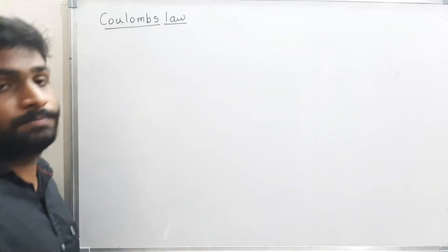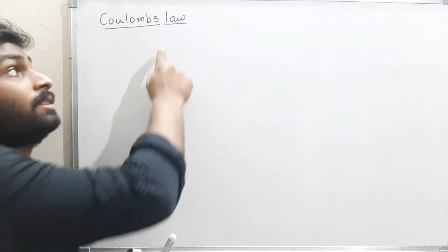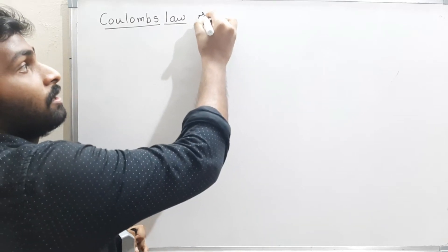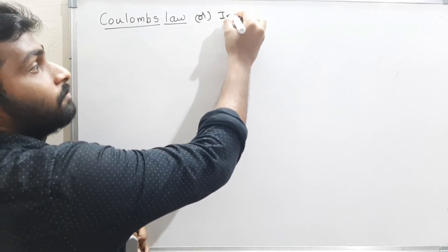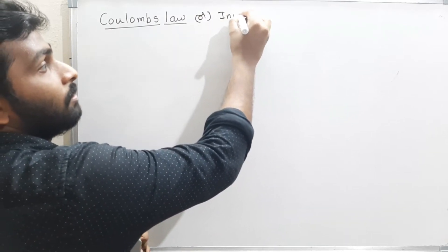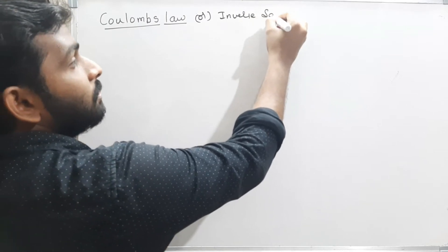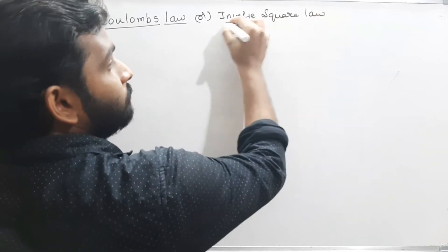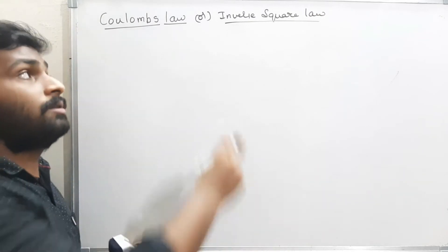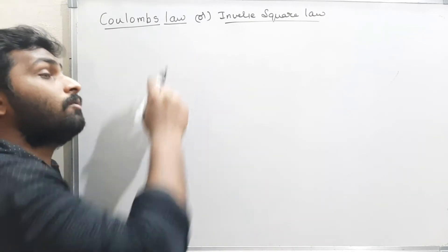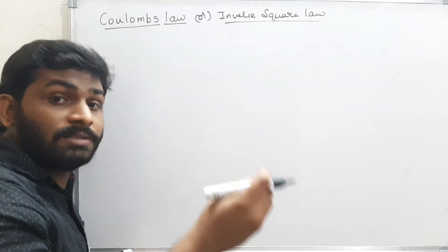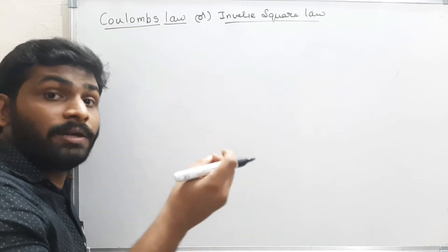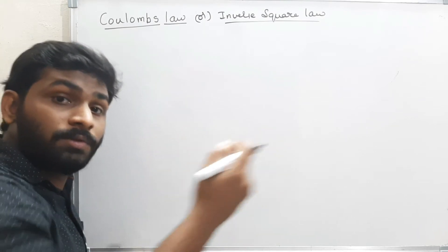First of all, what is Coulomb's law? The other name of Coulomb's law is the inverse square law. Coulomb's law gives us the relation between the charges, the distance between the charges, and the magnitude of force between the charges.